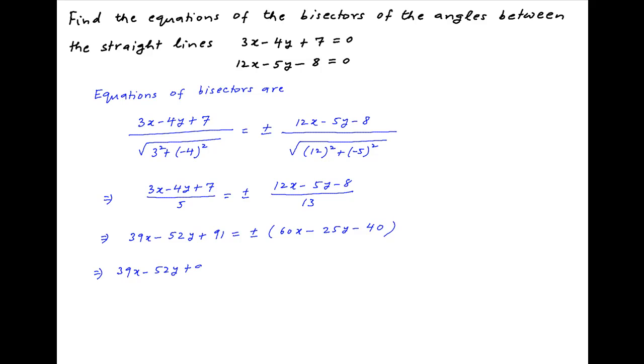Taking the plus sign we get 39x minus 52y plus 91 equals 60x minus 25y minus 40, which implies that 21x plus 27y equals 131. This is the first answer.